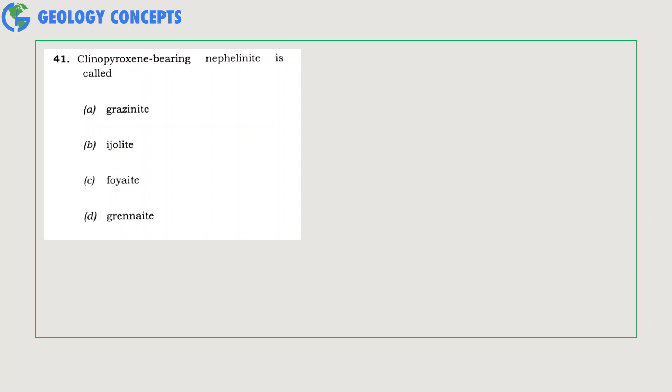Clinopyroxene-bearing nephelinite is called what? Ijolite is an igneous rock consisting essentially of nepheline and augite, which is a calcium clinopyroxene. Hence, option B ijolite is the correct answer. For your information, theralite is analcime, a feldspathoid-bearing nephelinite.